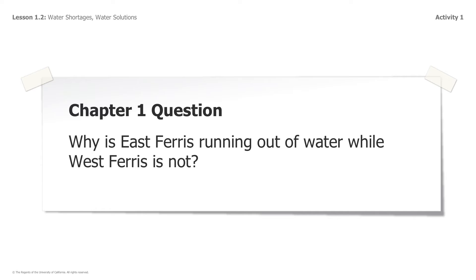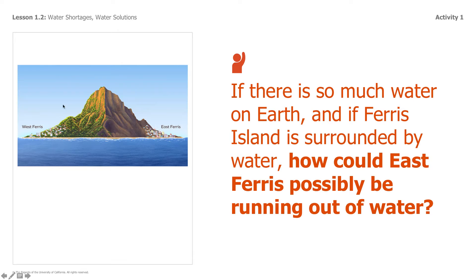So here is our chapter one question: Why is East Ferris running out of water while West Ferris is not? East Ferris and West Ferris are located here on an island. They're two very different cities. So our question is: if there is so much water on earth and Ferris is surrounded by water, how could East Ferris possibly be running out of water? Take a moment to jot down your ideas, then pause the video.